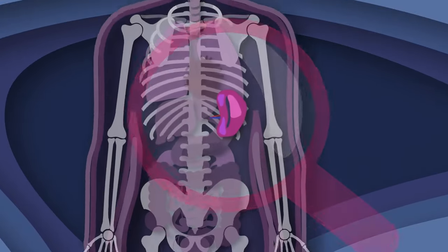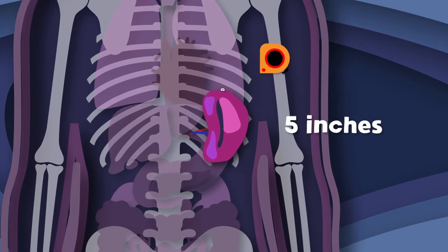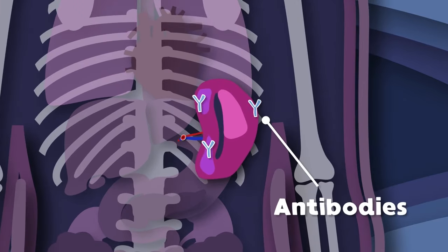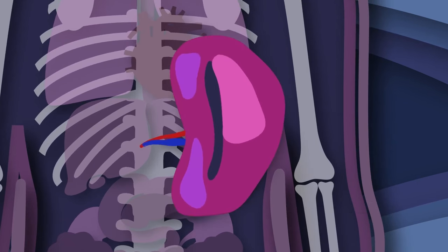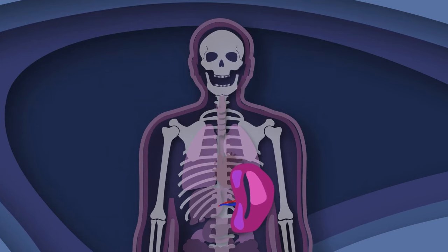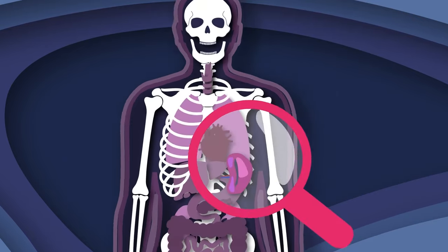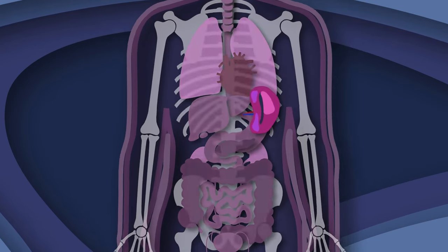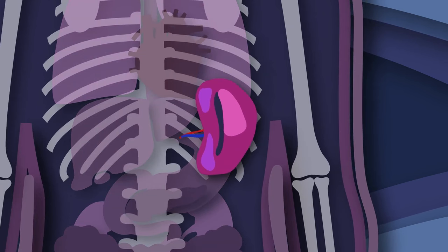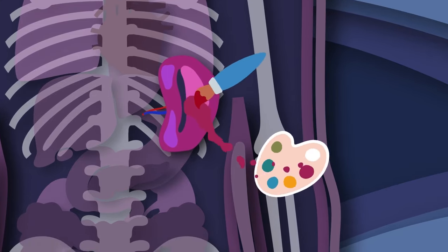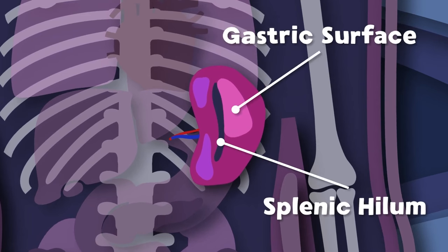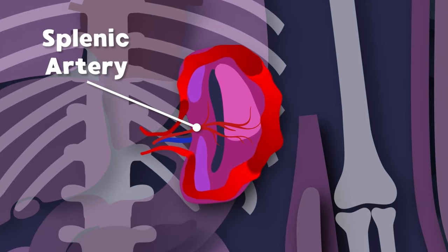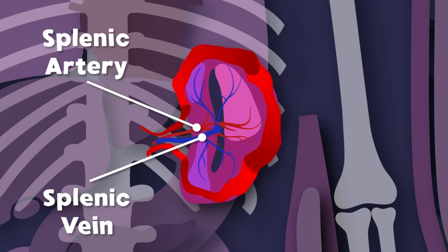I am your spleen. You will learn what this means. I am purple, five inches long, and I'm shaped like a bean. I'm your spleen. I produce antibodies and I keep your blood clean. I'm the spleen, the largest organ in the lymphatic system. You don't need me, but if removed from your body, you'll be more prone to infection. The spleen is located under the rib cage above the stomach, in the upper left quadrant of the abdomen. Here you see the splenic hilum and the gastric surface. There's the pancreatic and renal surface. The splenic artery supplies oxygenated blood to the spleen, and the splenic vein drains the blood from the spleen.